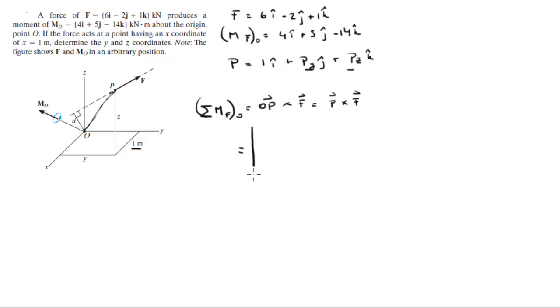So to calculate this you draw your matrix. You get your i, your j, your k. Here you get P which is 1, Py, and Pz, the values we're trying to find. And then you get the force Cartesian vector form of the force which is 6, minus 2, and 1. You redraw your first and second column: 1, Py, 6, minus 2.